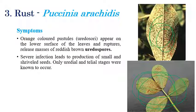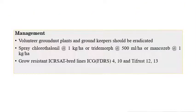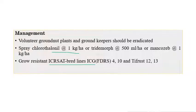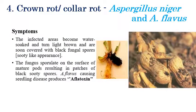For management of rust, volunteer groundnut plants and weed hosts should be eradicated. Spraying Chlorothalonil at 1 kg per hectare, or Tridemorph at 500 ml per hectare, or Mancozeb at 1 kg per hectare is recommended. Resistant varieties developed by ICRISAT include ICRISAT breed lines ICGV FDRS 4, 10, and TifRust 12 and 13S.